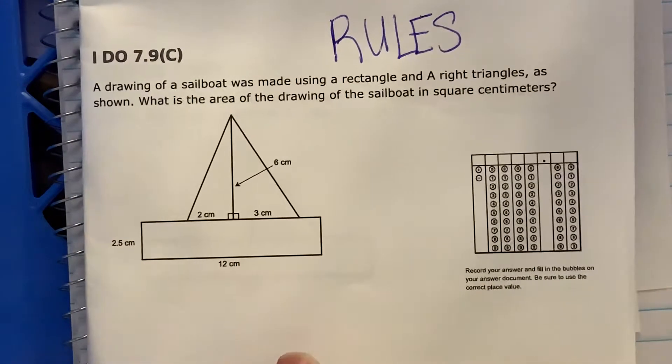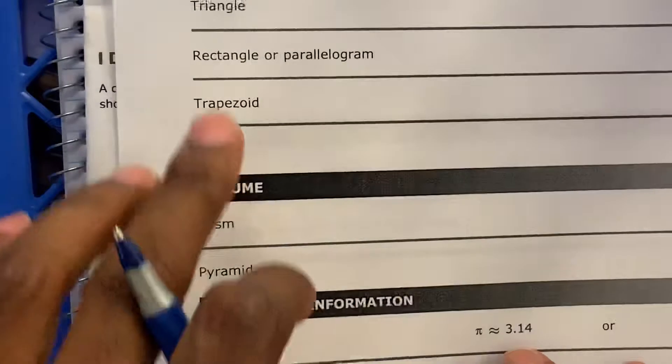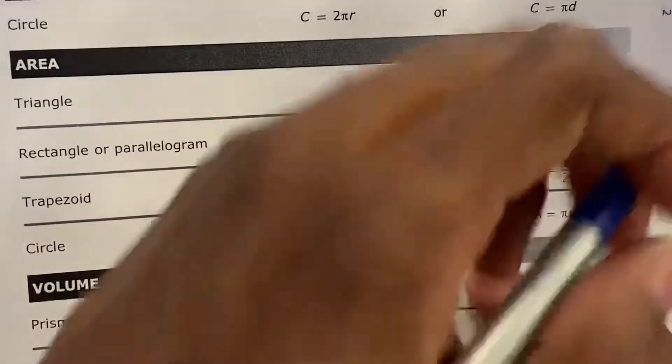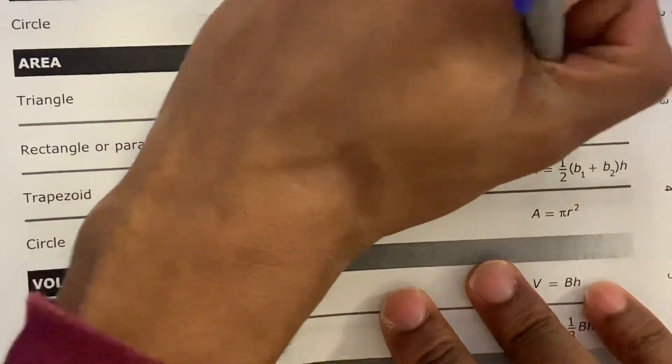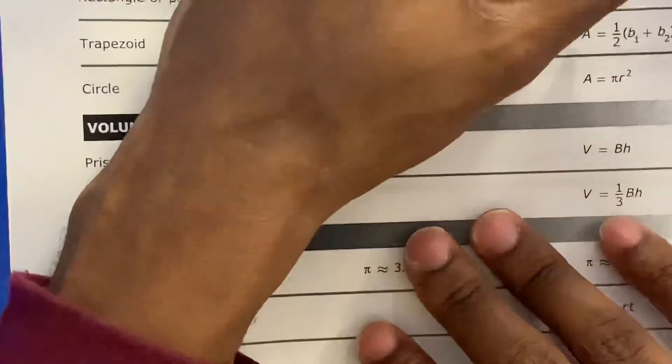So the first thing we need to do is we need to use our reference materials. Let's look for the area of a triangle, which is one half base times height, and then we need the area of a rectangle, which is base times height.